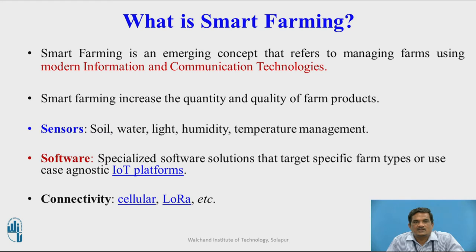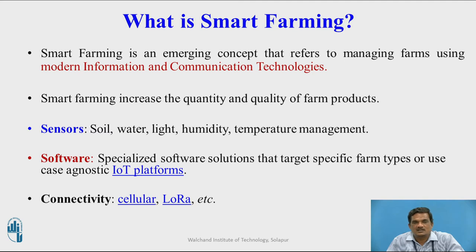Smart Farming increases the quantity and quality of farm products. IoT is usually employed in sensing soil, water, light, humidity, and temperature in a particular field. In order to check the pH value of the soil, IoT will enable users remotely to check the pH value of their particular soil, and also remotely monitor water management, light management, humidity, and temperature of that particular area.